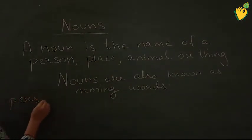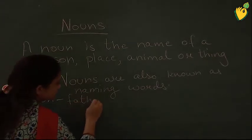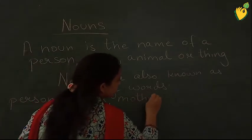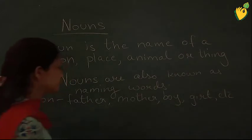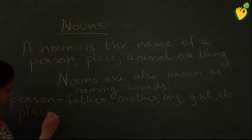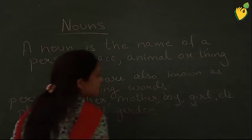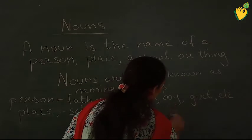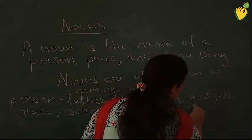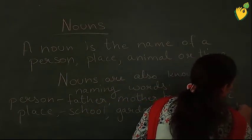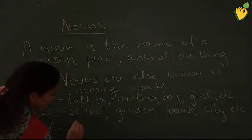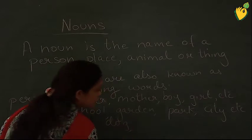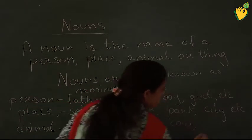A person — it can be father, it can be mother, it can be a boy, a girl, and many more. Then for place, it can be school, it can be garden, it can be any city, any park, and so on. For animals, it can be cat, dog, lion, cow, etc.